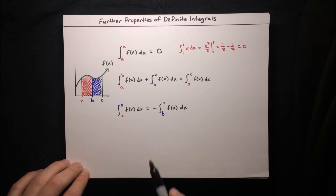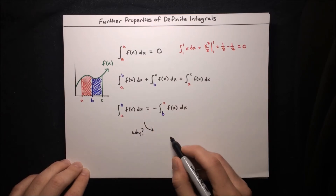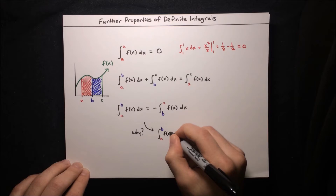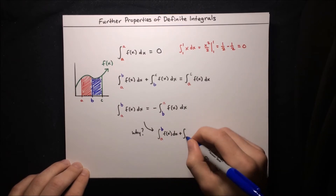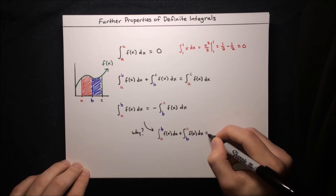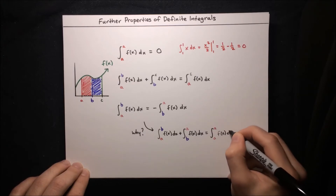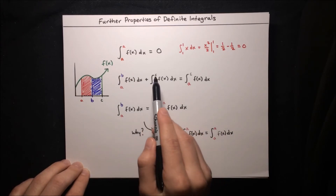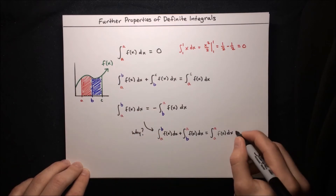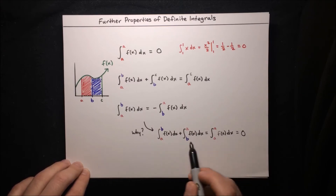Using the previous property, we know that the integral from a to b of f(x) dx plus the integral from b to a of f(x) dx has to equal the integral from a to a of f(x) dx — it's that statement with c equal to a. From the first property, the integral from a to a equals zero. So if the integral from a to b plus the integral from b to a equals zero, they have to be negatives of each other.